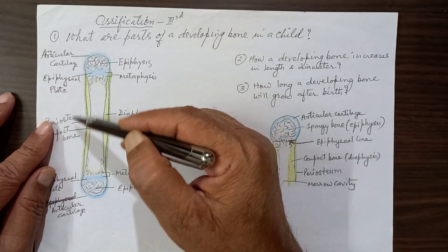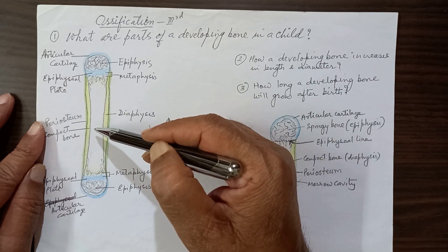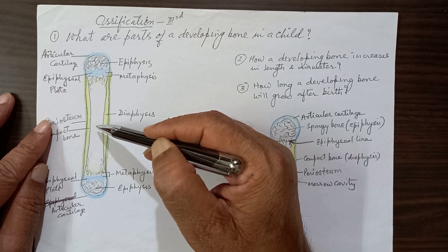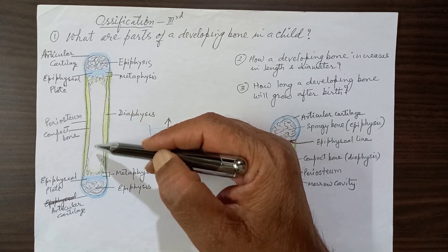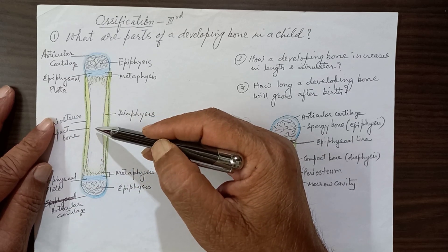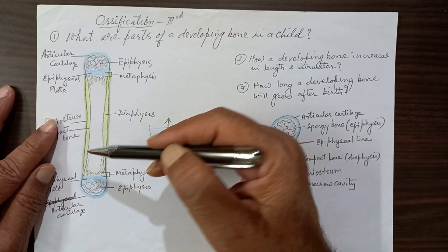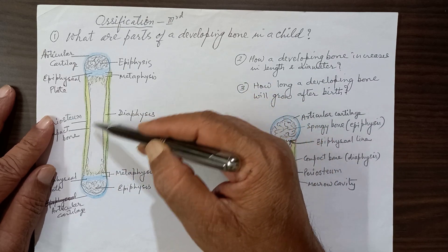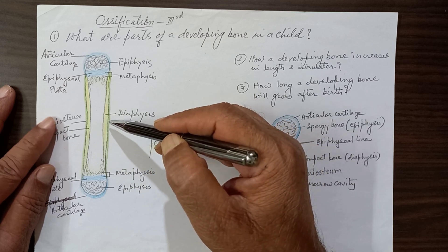The central part of a developing bone is known as the diaphysis, which has developed from the primary center of ossification as early as the eighth week of intrauterine life before birth. For example, at the age of three or four years the length of the humerus is much less compared to its length at age 16, 17, or 18 years — so the length keeps on growing.